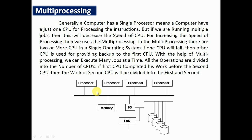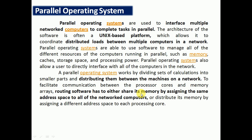Next is multiprocessing. In multiprocessing, a number of processors are used to execute multiple processes. There are two or more CPUs in a single operating system; if one CPU fails, the other provides backup. With multiprocessing, many jobs can be executed at a time, all operations are divided among CPUs, and if one CPU finishes early, the remaining work is redistributed.